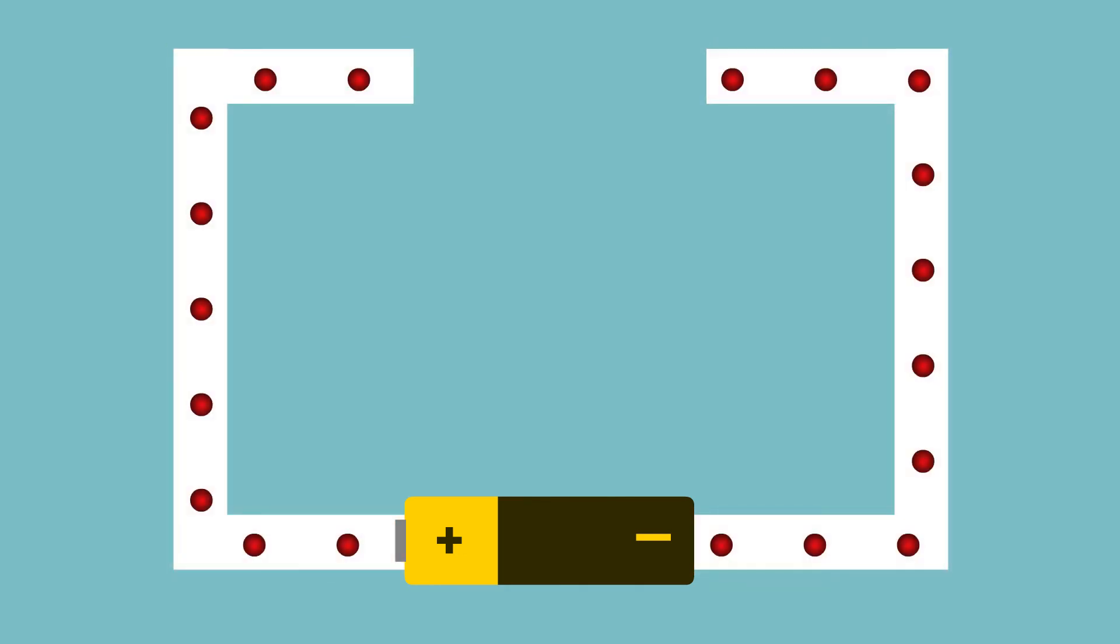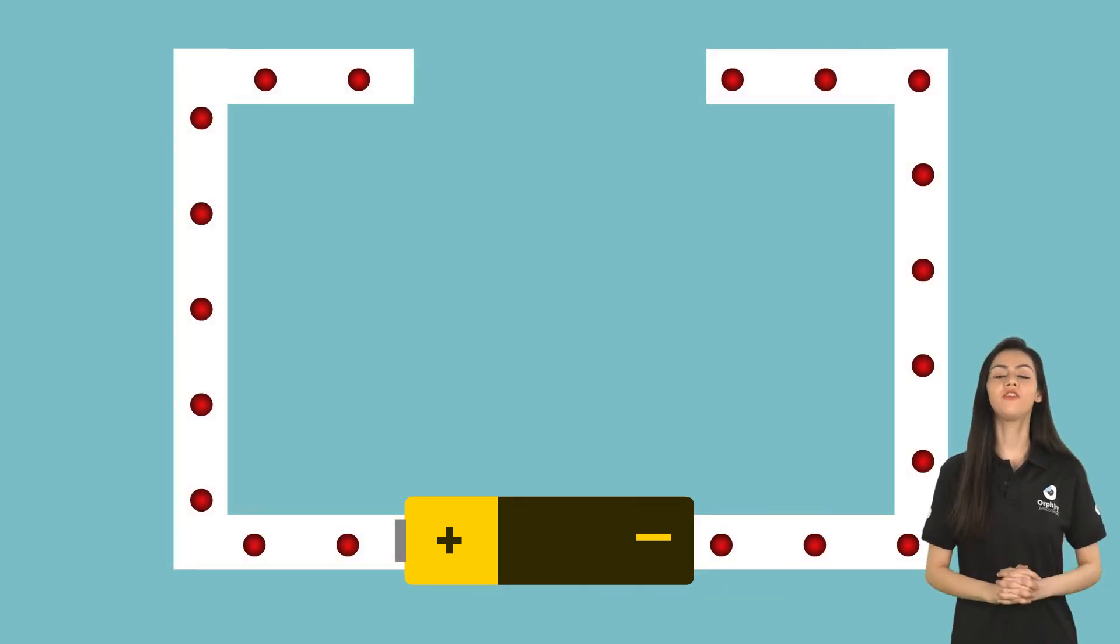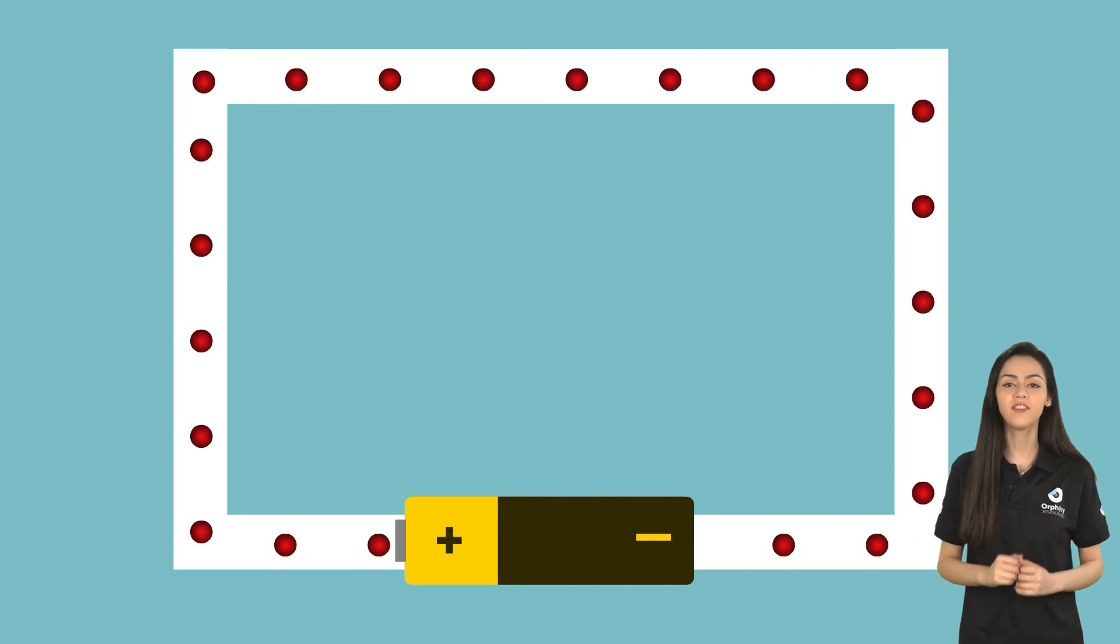If this path is blocked, maybe because the wire is cut, the electrons cannot flow stopping the electrical circuit. The key to the flow of electricity is making a continuous electrical circuit by connecting the wire between the source and an attractor of electrons.